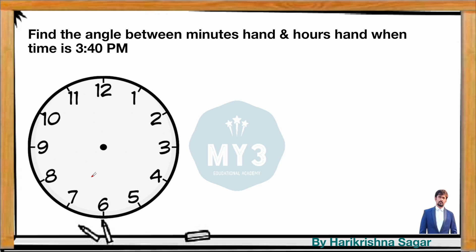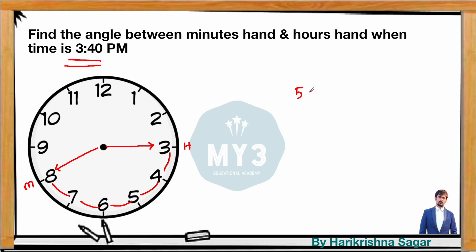Now let's find the angle at 3:40. At 3:40, the hour hand points towards 3 and the 40-minute mark means the minute hand points towards 8. Counting the gap: 1, 2, 3, 4, 5 — there are 5 hours of gap. So 5 × 30 = 150 degrees.